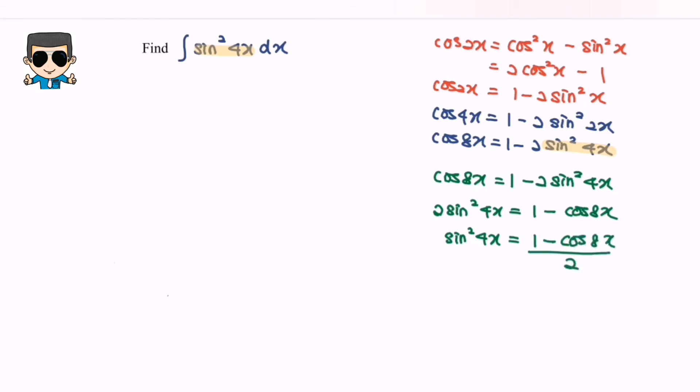So meaning that integrate sine square 4x is equal to integrate 1 minus cos 8x over 2 with respect to x. Simplify the situation: integrate 1 over 2 minus cos 8x over 2 with respect to x.